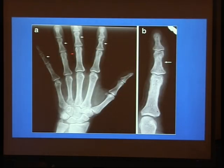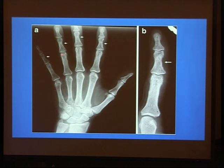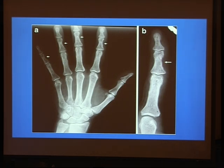This is a classic example and a routine finding for diagnosis of hyperparathyroidism — the erosion at the radial aspect of the lateral cortex of the middle phalanges. This magnified image shows the bone erosion and bone resorption — this is a sign of hyperparathyroidism with bone resorption.